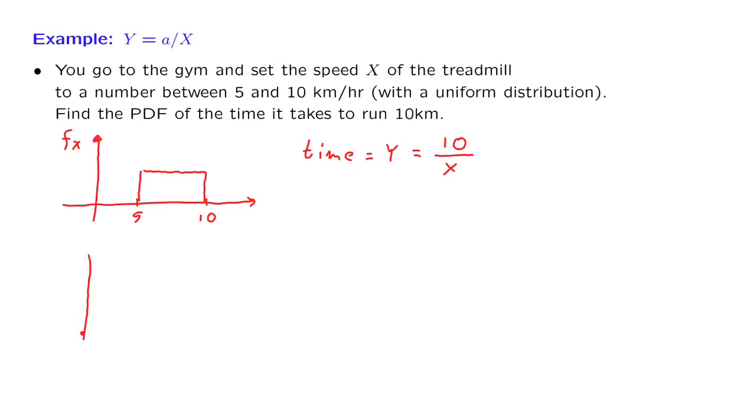First, let us look at the range of the random variable y. Since x takes values between 5 and 10, y takes values between 1 and 2. Therefore, the PDF of y is going to be 0 outside that range. And let us now focus on values of y that belong to this interesting range. So 1 less than y less than or equal to 2. And now we start with our two-step program.